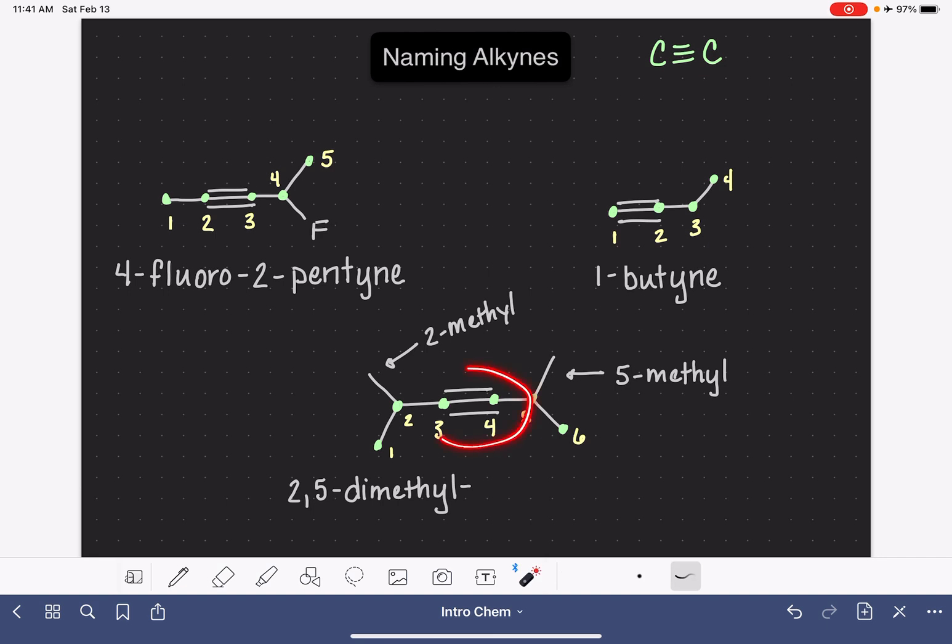Then we give the location of the triple bond using the lower number three. A six-carbon chain would be hexane, but this is an alkyne so it is hexyne.